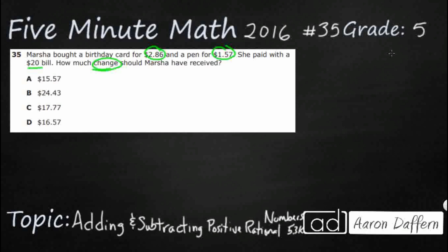When she's buying things, she's spending money, so we do know we are going to need some subtraction — not only because of that idea of spending, but also because of change. Change comes when you pay more than you need to. What she bought does not equal $20, so she's going to get some money back. But we don't know how much she spent yet.